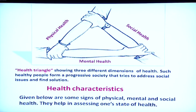These three aspects — physical, mental, and social — are shown in the health triangle. Observe the three hands holding each other; that means the three factors go together. Only when a person is physically, mentally, and socially healthy is one called truly healthy. How do we recognize whether a person is healthy or not?